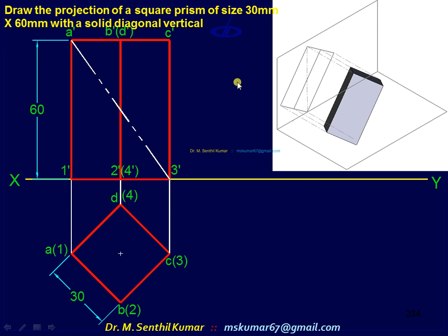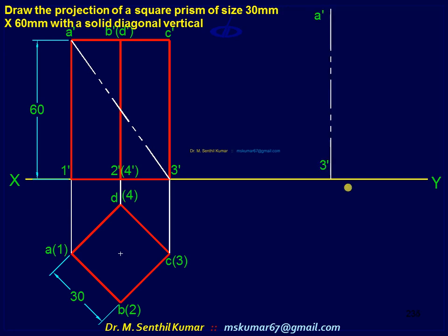So we will see that step by step. First, make the solid diagonal vertical. Take the height using the compass and set the height. Now this solid diagonal is vertical. Now with respect to this, mark the points of the solid.